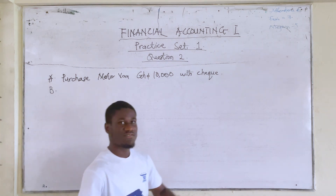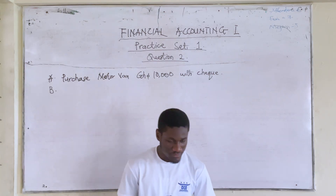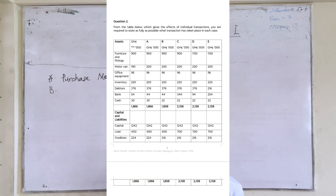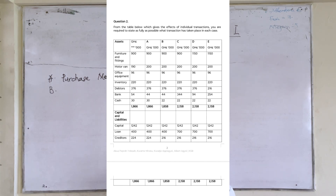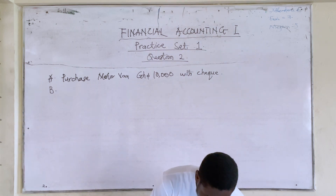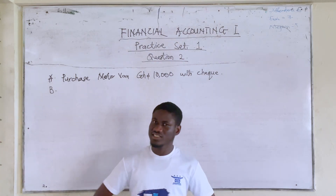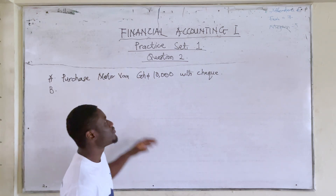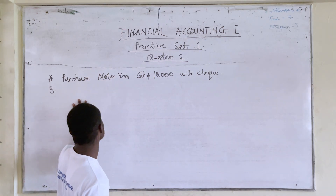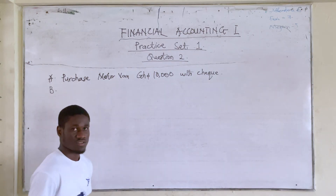Now moving to B, we are going to compare the effects at A to B. When we check A to B, we can see that everything was intact except that cash decreased and creditors also decreased. Cash decreased by 8,000 and creditors also decreased by 8,000. That means that we paid creditors 8,000 by cash.